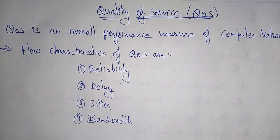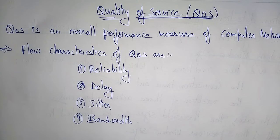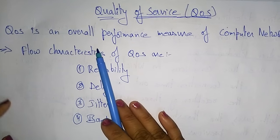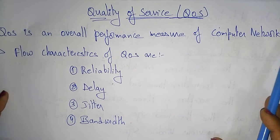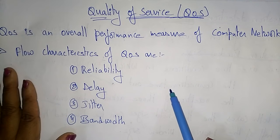Coming to the next topic in the transport layer: Quality of Service. So far we discussed different protocols — TCP, UDP — and congestion control. Now let's see the Quality of Service (QoS). QoS is an overall performance measure of a computer network. There are some flow characteristics of quality of service: reliability, delay, jitter, and bandwidth.